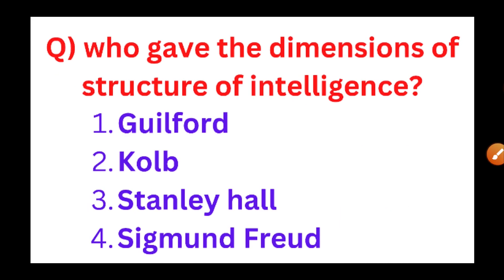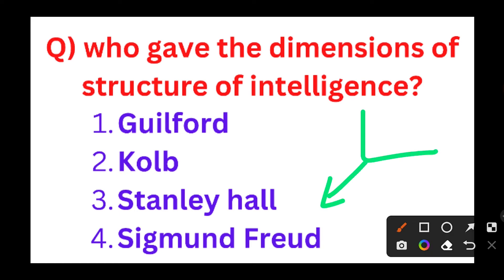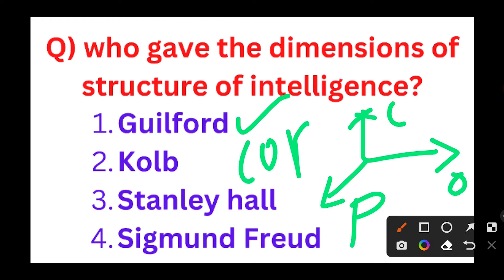Now let's move to the second question. Who gave the three dimensions of structure of intelligence? The options are Guilford, Kolb, Stanley Hall, and Sigmund Freud. The dimensions of structure of intelligence is given by Guilford. Guilford gave the dimensions of structure of intelligence — these are content, operation, and product.